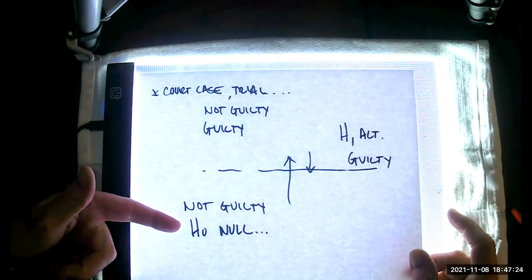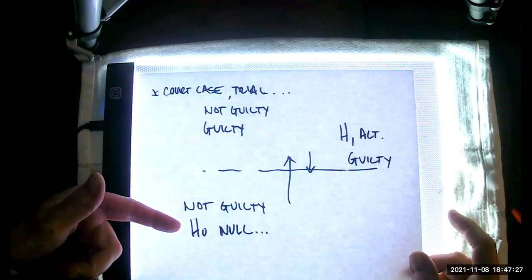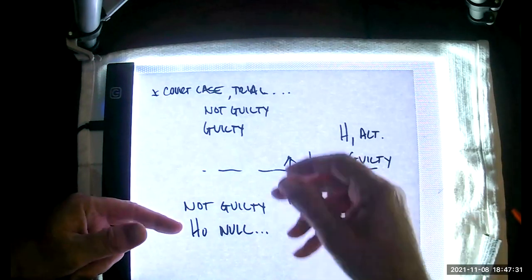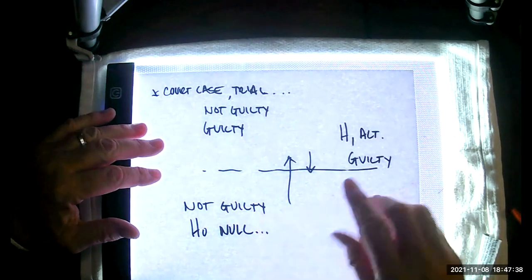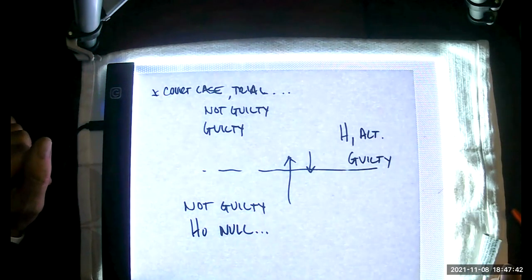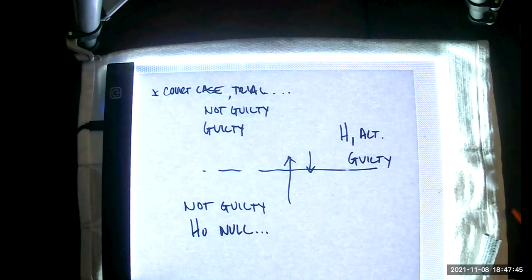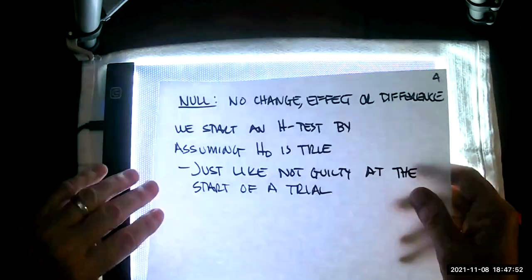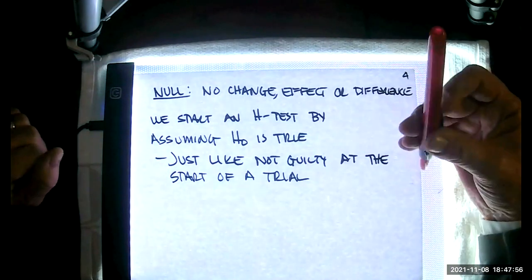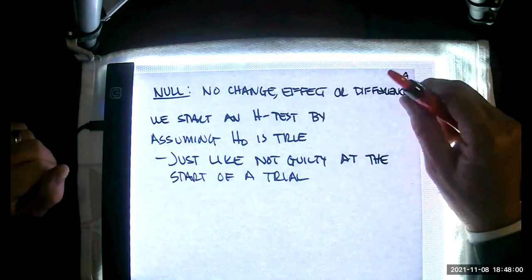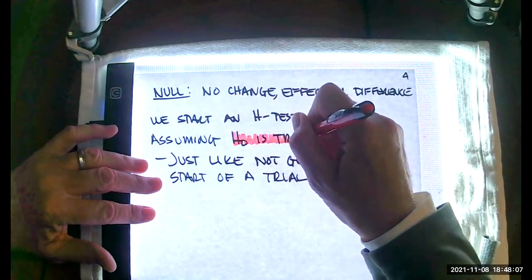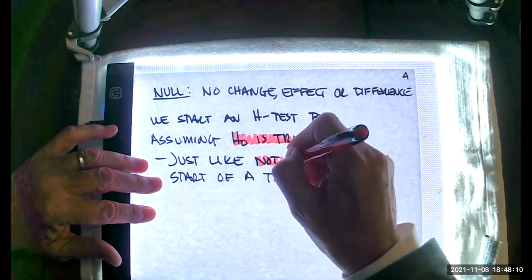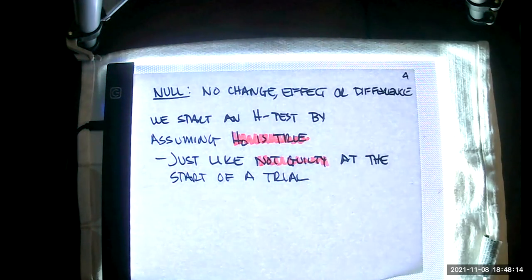We begin with this notion of the null hypothesis and assume it is true. Evidence is provided, and if it's strong enough, we discard the notion that the null hypothesis is true and assume the alternative has a much better chance of being correct. The null hypothesis really says that there is no change, effect, or difference. We always start a hypothesis test by assuming that H-naught, the null hypothesis, is true — just like the not-guilty starting point at the start of a trial.